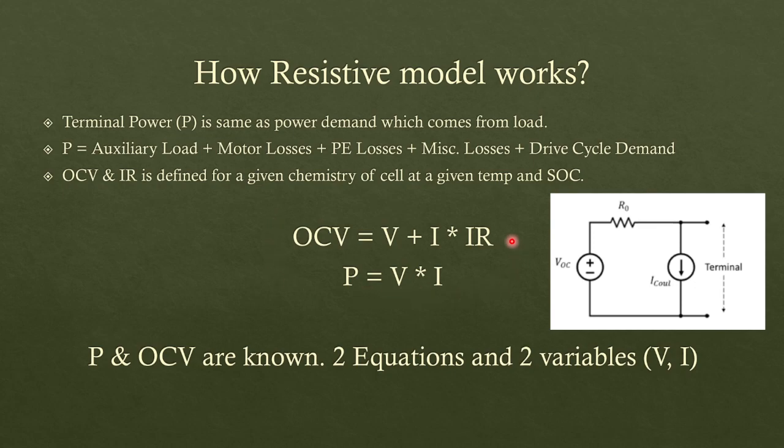What you are left with is these two equations. So we have OCV equals V plus I times IR, terminal voltage plus current times internal resistance. P equals VI by Ohm's law. So you have two equations and two unknowns: V and I, terminal voltage and current. And you can easily solve this equation to get both these unknowns. So this is how resistive models works in the background, which is one of the commonly used models in simulation.